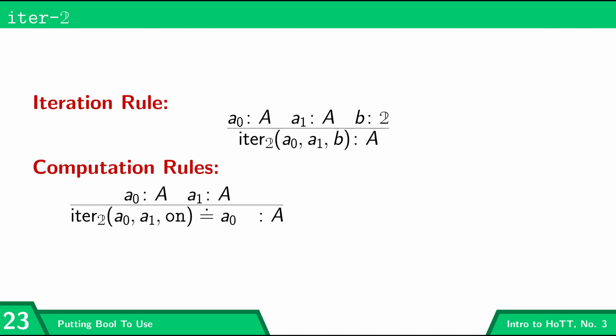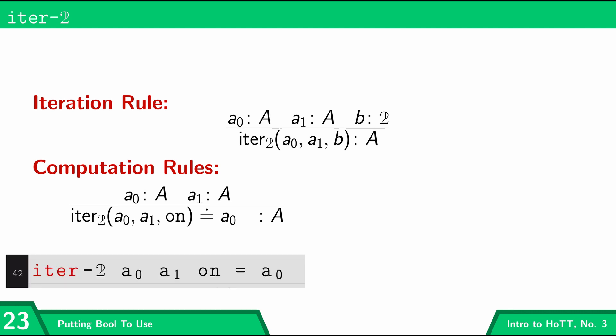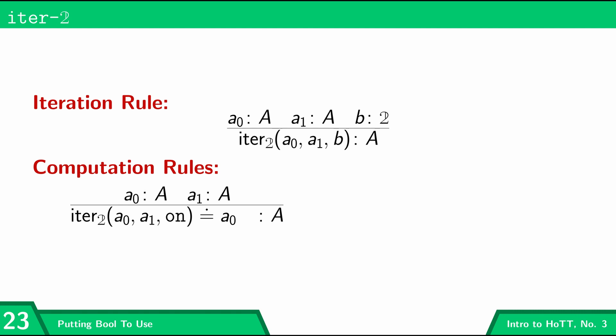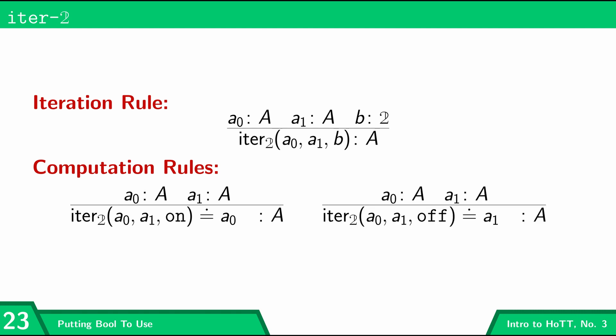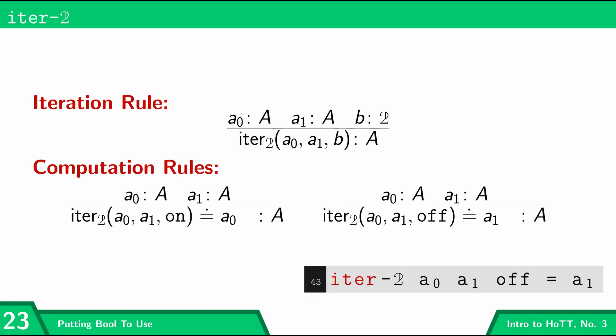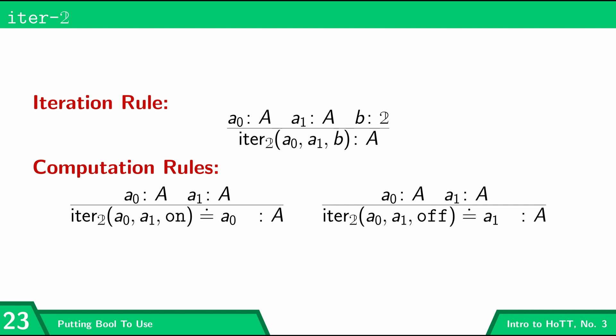The first computation rule says that if I do 'iter-bool a0 a1 on', then that's going to select 'a0'. This corresponded to one line in our code. The other says the corresponding thing for 'off': if the boolean I give is 'off', then it's going to select the second thing 'a1'. This is the general shape in the deductive calculus of how we make types useful — we give an iteration rule and computation rules which say how the iteration rule works.